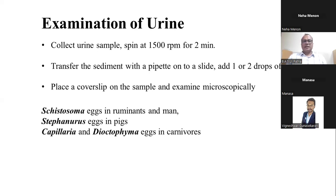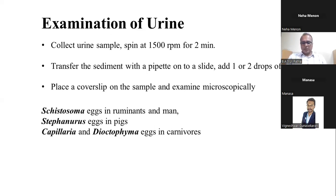Some parasites are found in the urinary system — for example, Schistosoma haematobium in humans, Stephanurus dentatus in pigs, and Capillaria or Dioctophyma in carnivores. Their eggs pass through the urine and can be detected by centrifuging the urine sample and examining the sediment under the microscope.